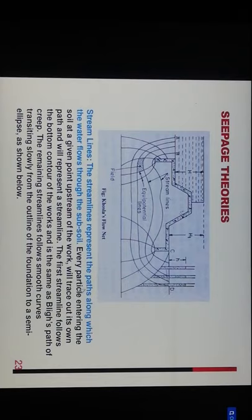Streamlines represent the path along which water flows through the subsoil. Every particle entering the soil at a given point upstream will trace out its own path, and they represent streamlines. The first streamline follows the bottom contour of the works, similar to Bligh's creep path. The remaining streamlines follow smooth curves, transiting slowly from the outline of the foundation to semi-ellipse.